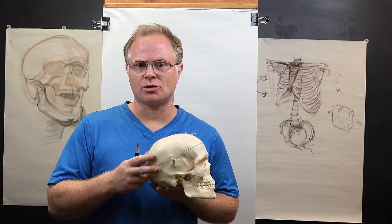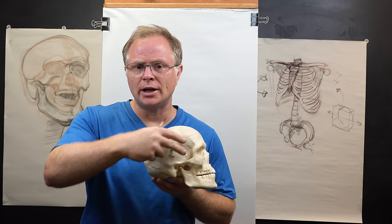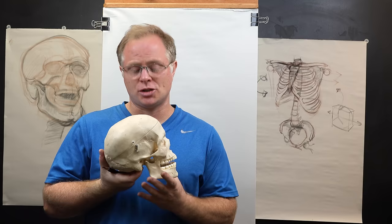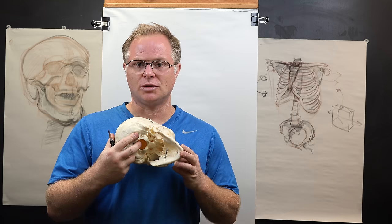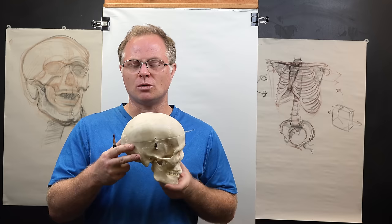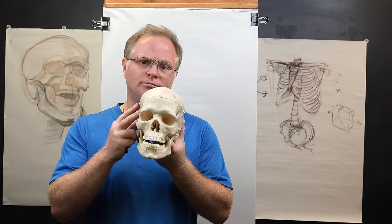Anytime we talk about head structure, we want to bring in the skull, but also make sure we bring down the neck. Head and neck together — know your proportions, hit your landmarks. The skull comes in two parts: the cranial area up top, which looks like an egg form especially from profile, and then the mandible area, which can actually be separated and is a separate V-shaped form.